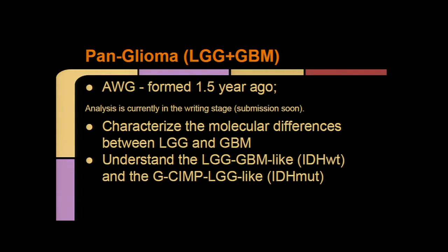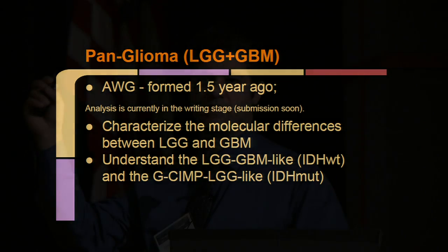These two efforts by TCGA expanded our insight into the glioma field, particularly looking at the molecular features associated with clinical phenotypes. Given this, we formed an analysis working group that started about one and a half years ago. We're currently in the writing stage. The idea is to look at and understand the molecular characteristics between low-grade gliomas and GBM, and with this larger expanded dataset, understand the relationship between GBM-like LGGs and the G-SIMP phenotypes.